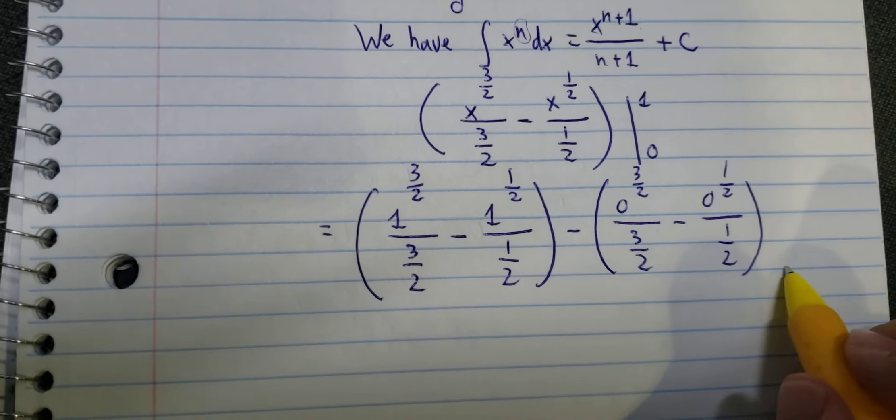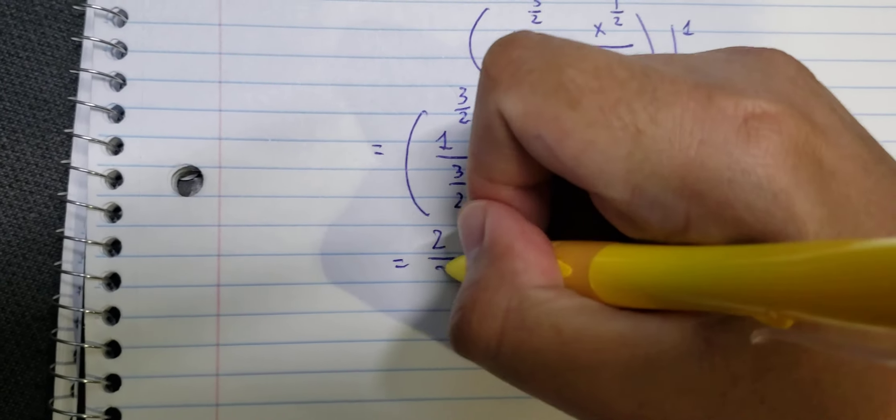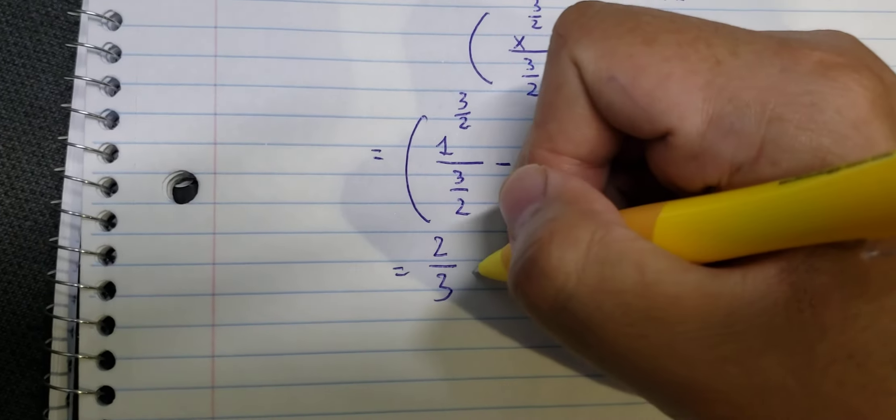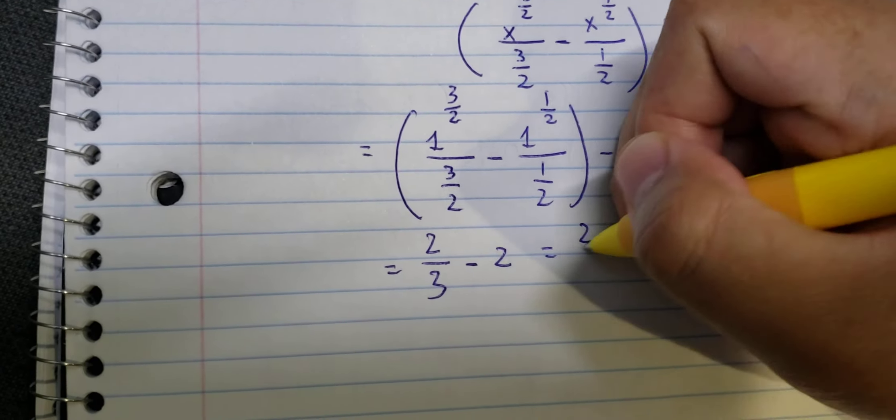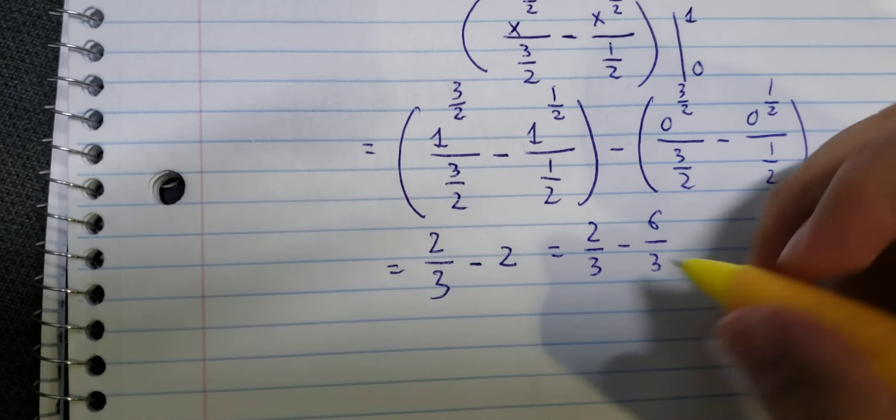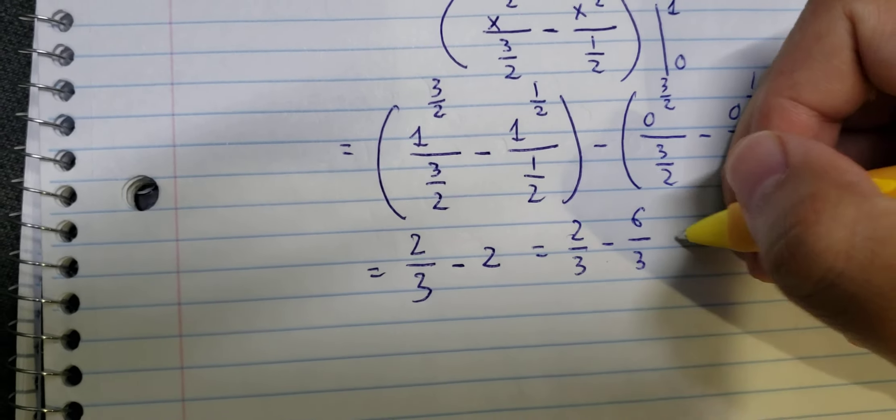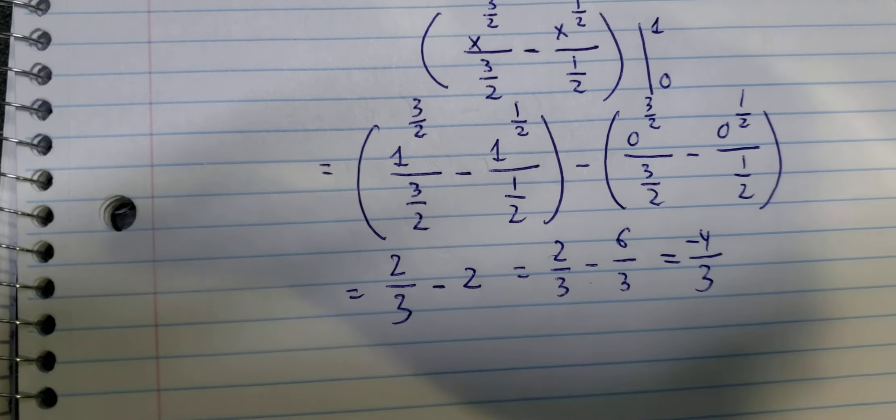So this one you got number zero. This one we have two over three, this one we have number two. So number two we can transform into number six over number three. So number two minus number six, we have negative number four, and this is the final answer.